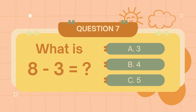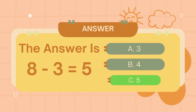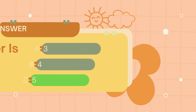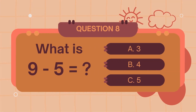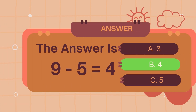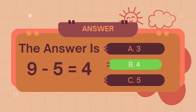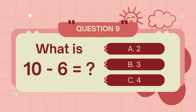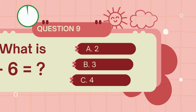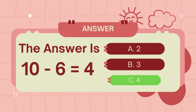What is 8 minus 3? The answer is 4. What is 9 minus 5? The answer is 4.